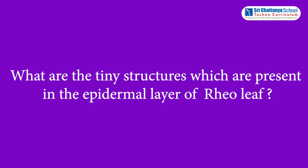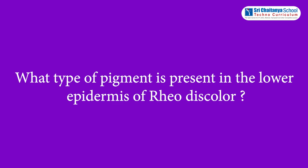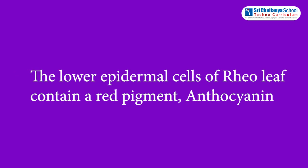Evaluation questions: What are the tiny structures present in the epidermal layer of the real leaf? The answer is stomata. The next question: what type of pigment is present in the lower epidermis of Rhoeo discolor leaf? The answer is that the lower epidermal cells of Rhoeo leaf contain a red pigment called anthocyanin.